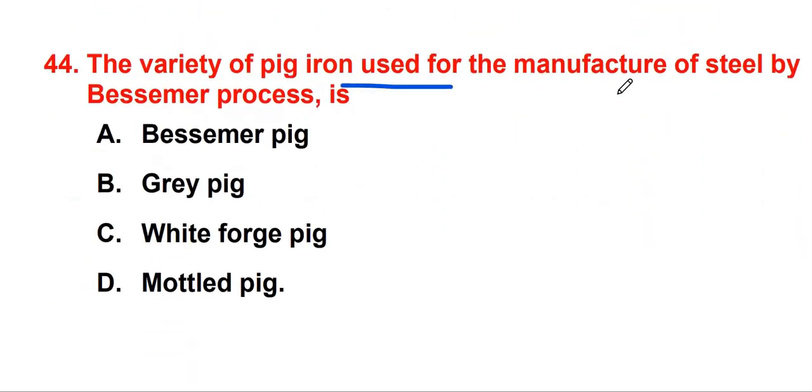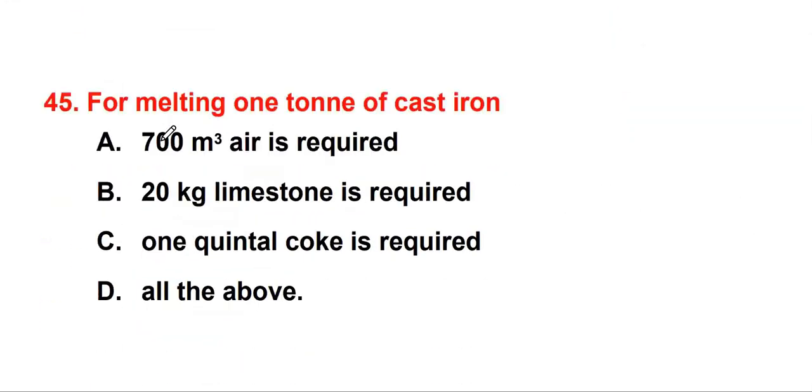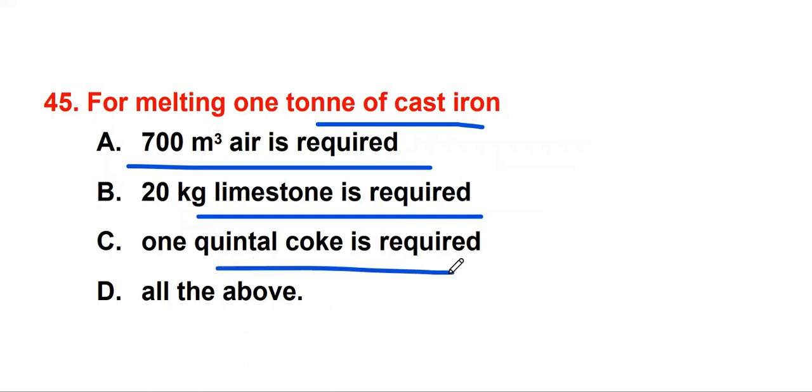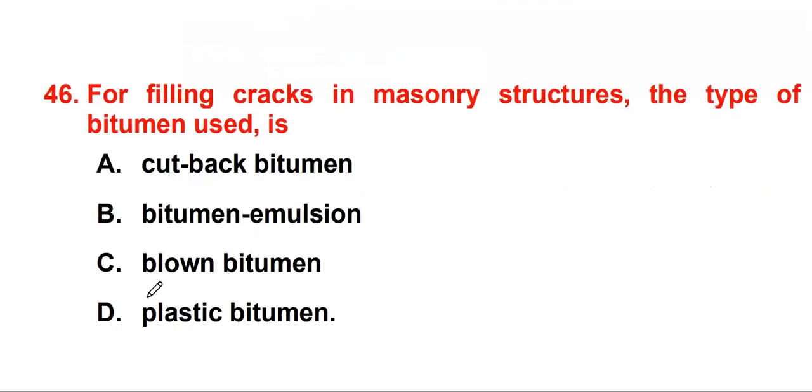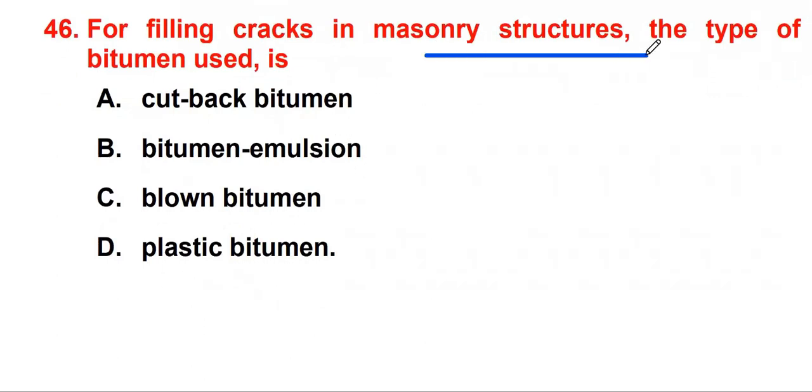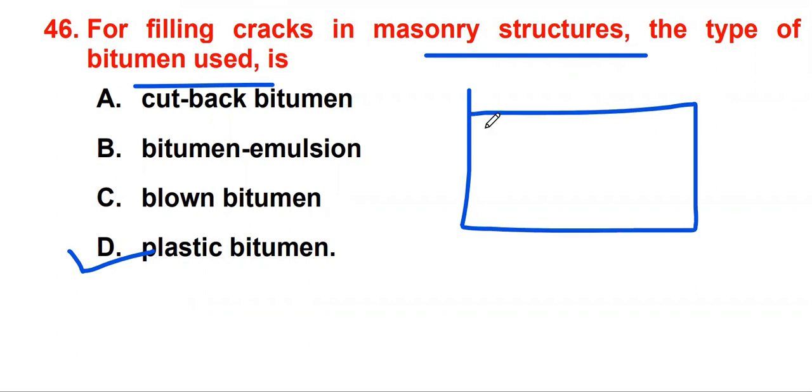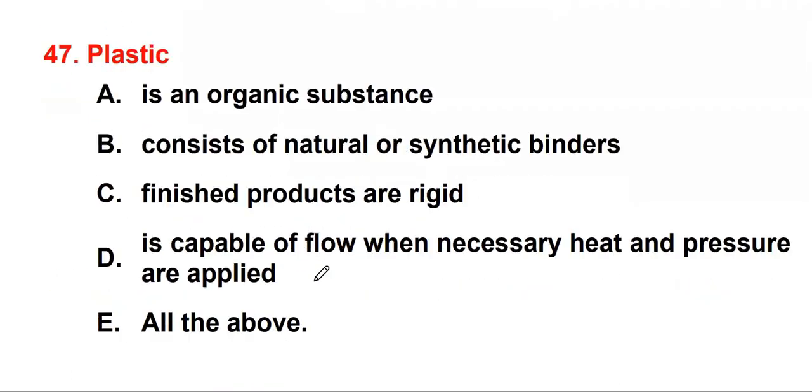The variety of pig iron used for manufacture of steel by Bessemer process is Bessemer pig. For melting one ton of cast iron, 700 cubic meter air is required, 20 kg limestone is required, and one quintal coke is required. So all the above is correct. For filling cracks in masonry structures, the type of bitumen used is plastic bitumen. If cracks occur in masonry structures, then for filling these cracks we use plastic bitumen.